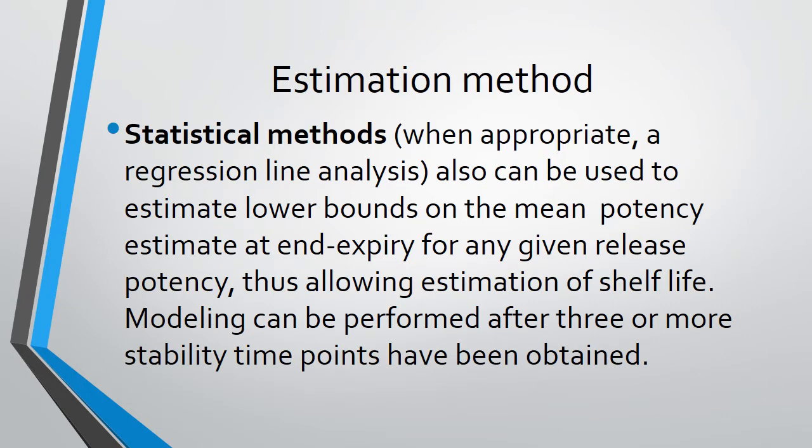The Estimation method is a statistical method. When appropriate, a regression line analysis can also be used to estimate lower bounds on the mean potency, estimated at the end expiry for any given release potency, thus allowing estimation of shelf life. The statistical model is used in regression line analysis and we estimate the end expiry, which is the release of the product, check the potency, and calculate shelf life.